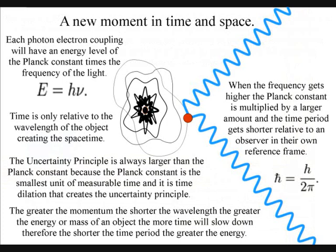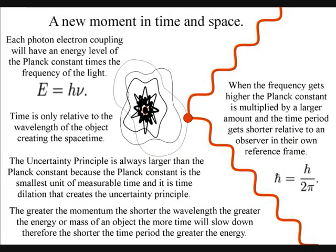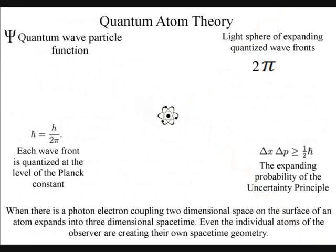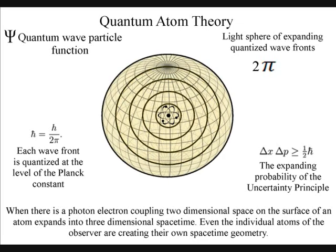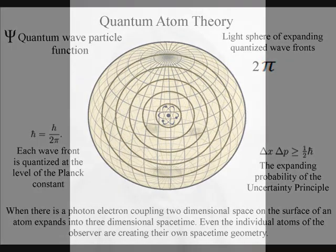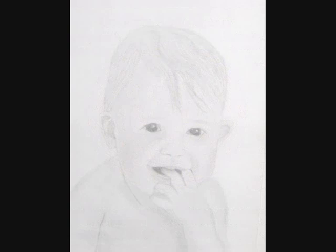In this theory, at the quantum level of the atoms, the moment of now is created by a single photon-electron coupling, creating a wave function of future possibilities. Even the individual atoms of the observer are radiating electromagnetic radiation continuously. The observer will feel this as the continuous flow of time and as the aging process.